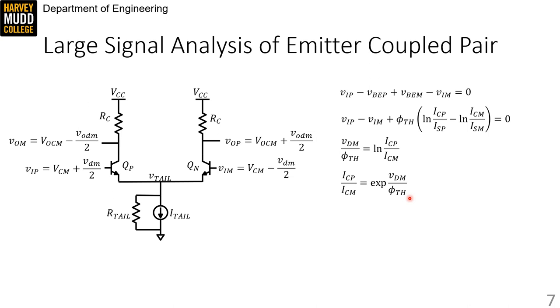However, IP and IM have to add up to ITAL, so there's only a finite amount of current in this structure. And if you combine this constraint with this equation, you'll find out that ICP and ICM could each individually be represented by a hyperbolic tangent function of VDM over phi_TH.